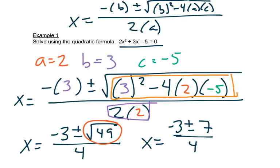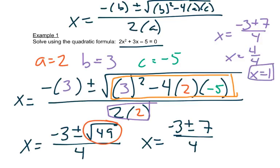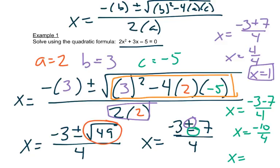This leads us to two answers, just like in the last section — I'll write two equations. The first equation gives x equals negative 3 plus 7 over 4. Negative 3 plus 7 is 4, so 4 over 4 gives x equals 1 as the first answer. Using the minus sign: x equals negative 3 minus 7 over 4, which is negative 10 over 4. Reducing that gives negative 5 over 2 as the second answer.